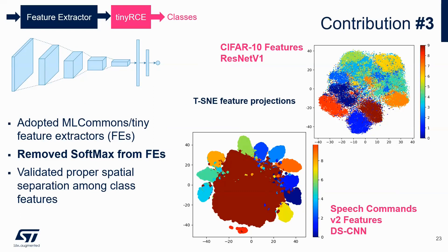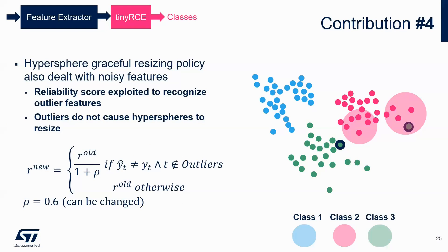These are the distributions of features for keyword spotting (QWS) and image classification, using the two feature extractors: ResNet V1 and DSCNN. You can see that on image classification, the distribution is quite noisy, which may imply a lot of outliers for the TinyRCE. What we did is allow a graceful reduction of the hypersphere radius through different methods. If there are outliers acting as noise, these will not influence the hypersphere geometry reduction.